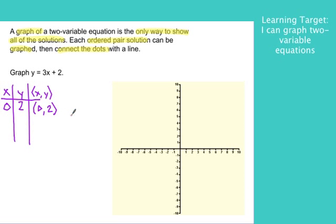So 0, 2, I can plot that on the number line. I'm going to go over 0, up 2. Put the dot right there. And then 1, 5. Notice guys, a coordinate plane is nothing more than two number lines.